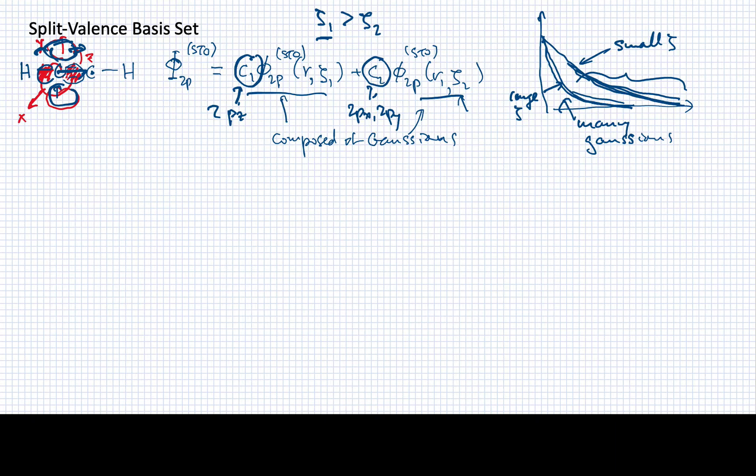Let me summarize what I'm saying here. I've got two different Slater type orbitals, one narrow and one broad. The narrow one is going to require many Gaussians to model it. The broader one doesn't require as many Gaussians. So what I have basically created here is something we call a split valence basis set.